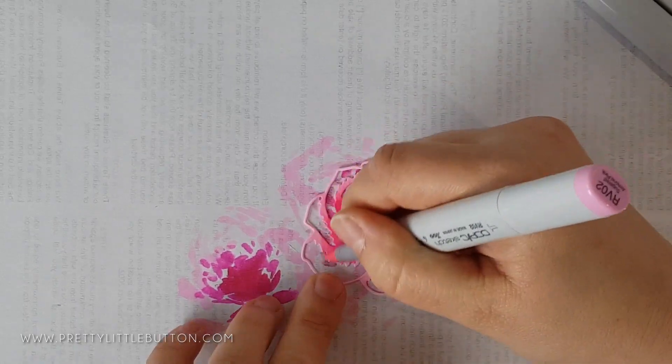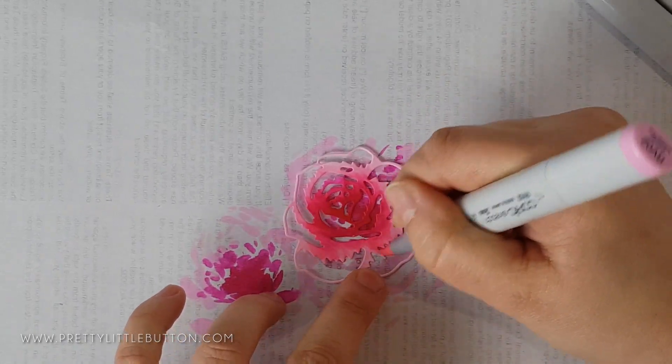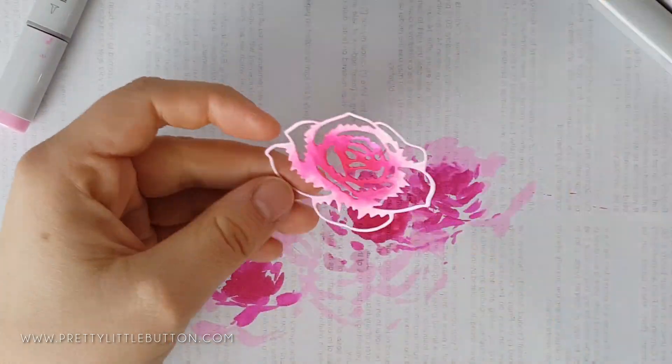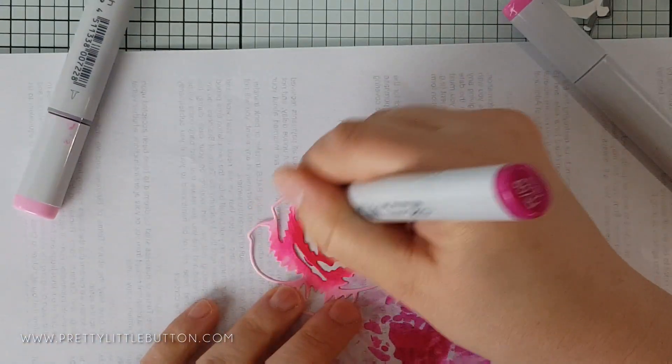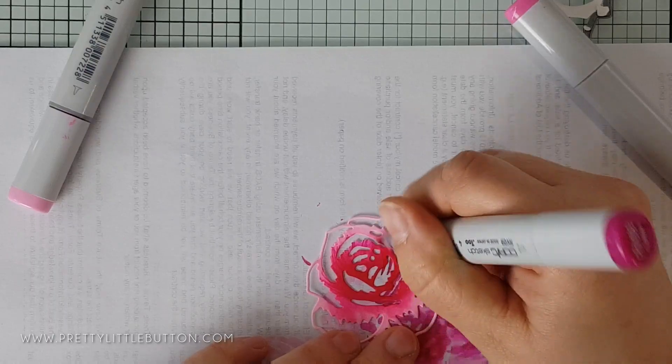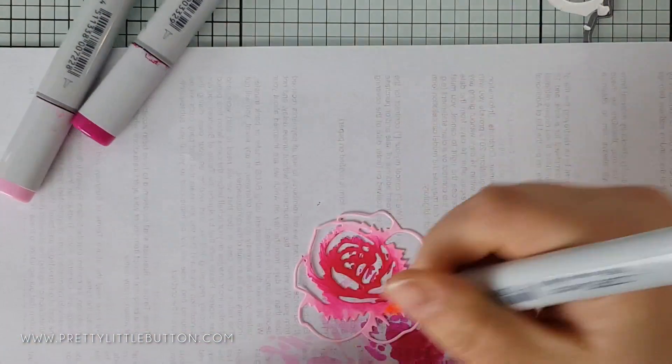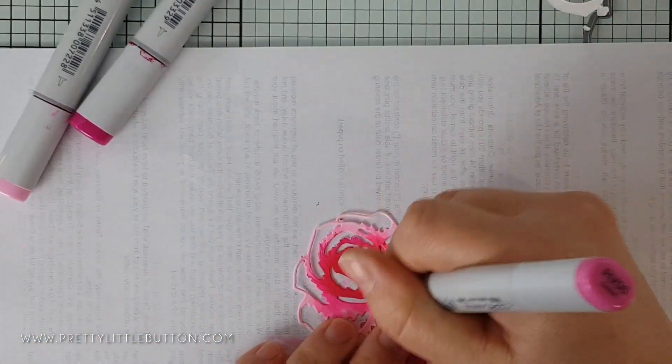You may find it looks a bit messy to begin with when you're coloring these in, but when you start to blend out the colors it can really look stunning. In addition to these two, I also colored another rose outline die cut so on my finished card I'd have three florals.